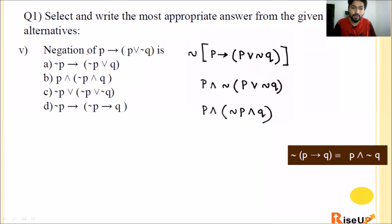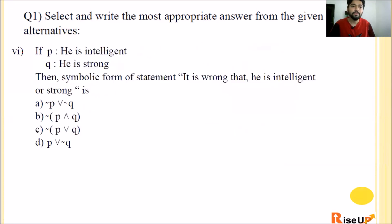Let us look at the fifth one. Negation of P implication P or negation Q is. We have to take the negation of this. Treat P implication Q as Q. We know that the negation of P implication Q is P and negation Q. So first part as it is, P, and negation of P or negation Q.